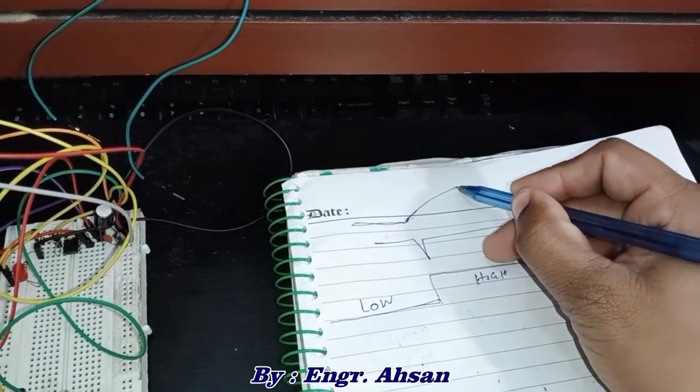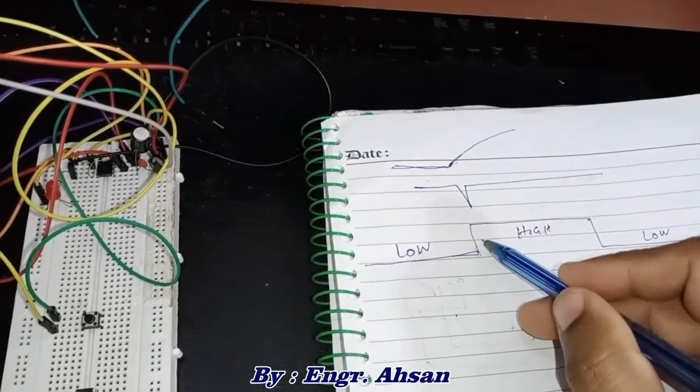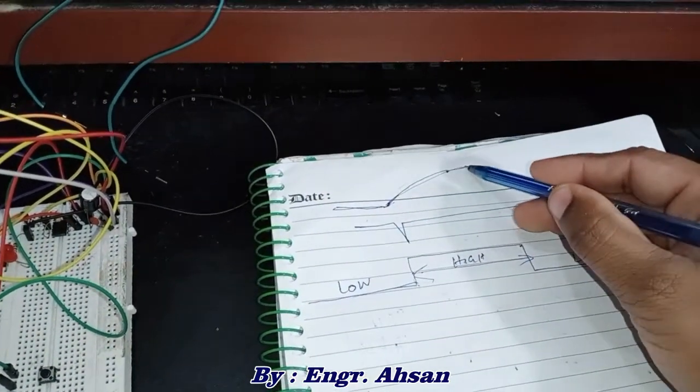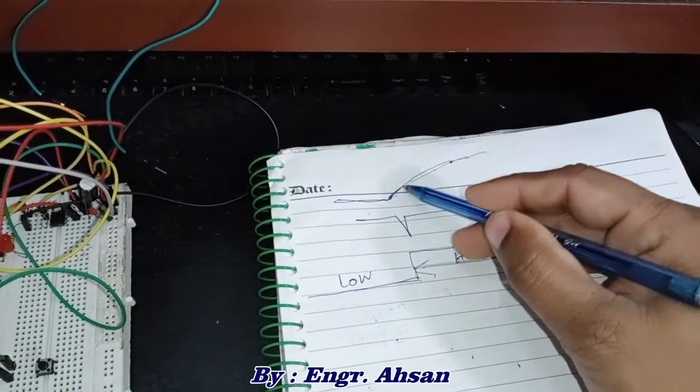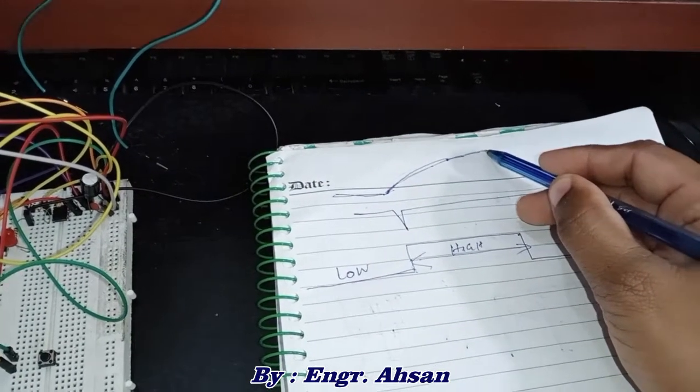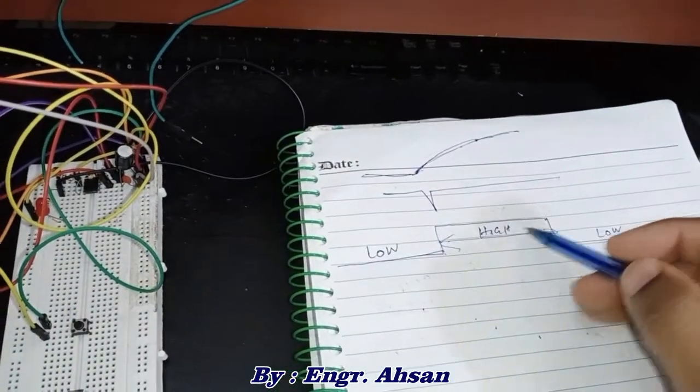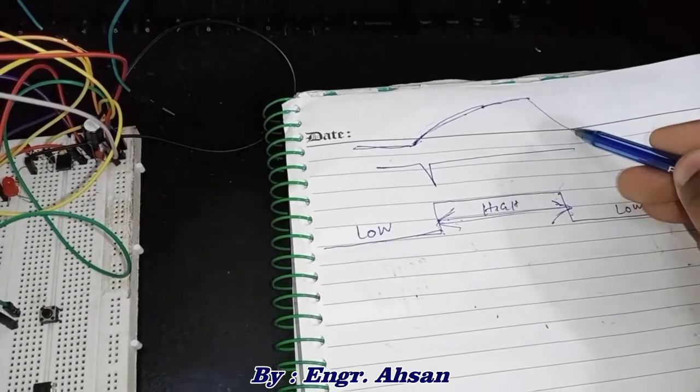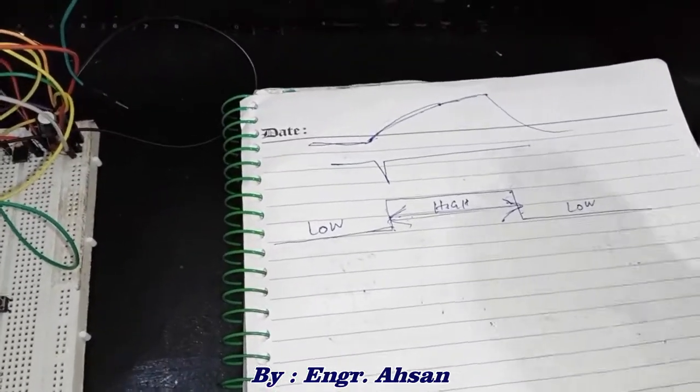After this particular amount of time, the capacitor became fully charged, and then as this time finishes, what happens is this capacitor again goes to low position. So output again becomes low.